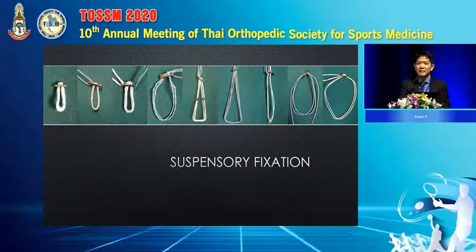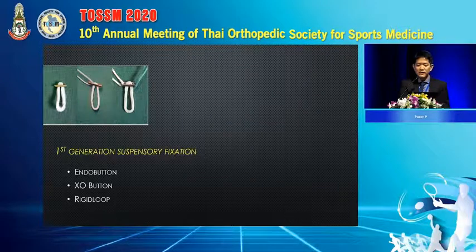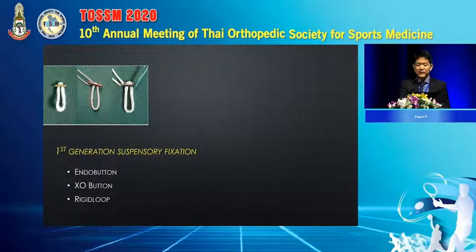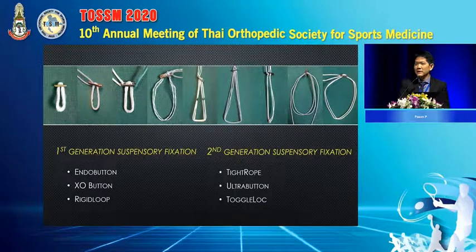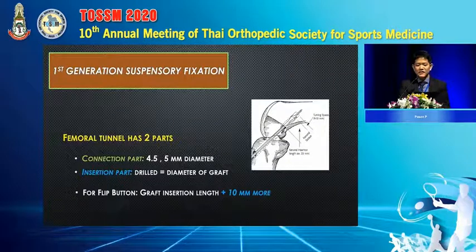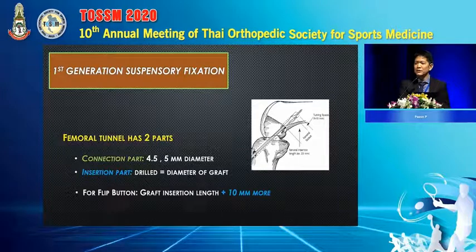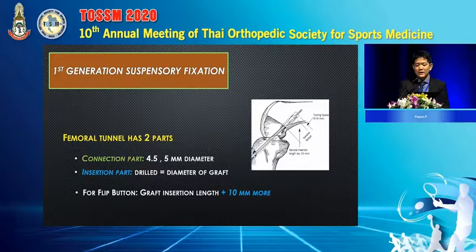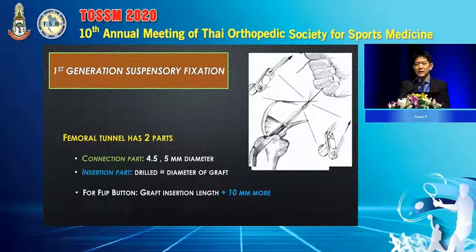Next is Suspensory Fixation, also called Cortical Fixation. The first generation uses a fixed loop — not an adjustable loop — such as Endo-Button, XO-Button, or Rigid Loop. The tunnel has two parts: Connection Parts and Insertion Parts. The button moves forward through the Connection Parts. With the Insertion Parts, we drill to the width of the graft and add 7–10mm so the button can be flipped over the cortex.